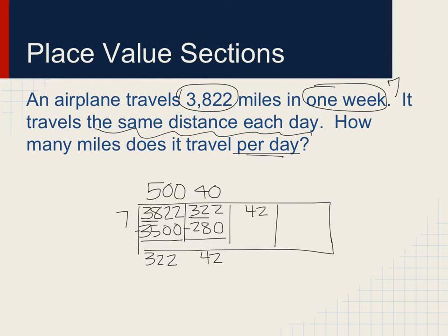That amount goes up into the next box and I know that seven goes into 42 exactly six times. So when I subtract there is nothing left over, so no remainder. And now all of these added together would be the answer, 546 miles per day.